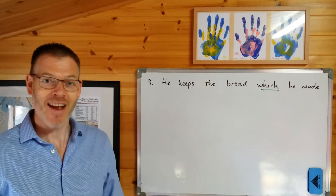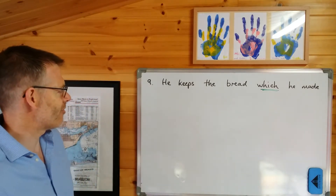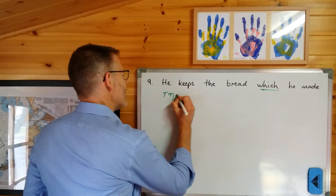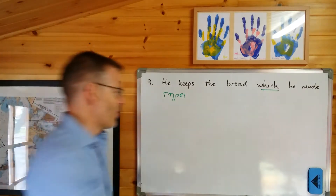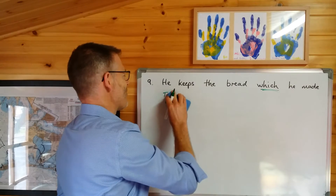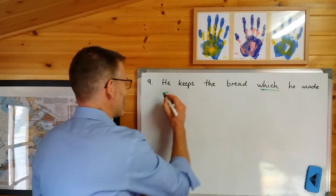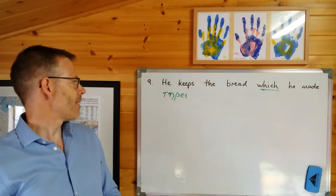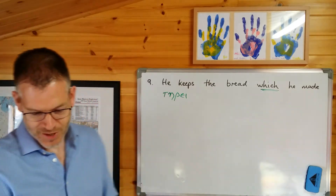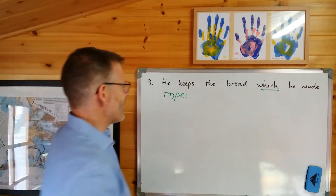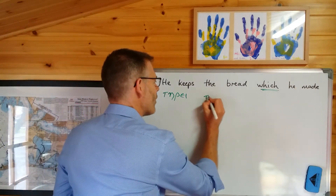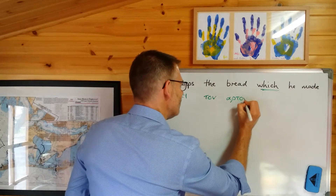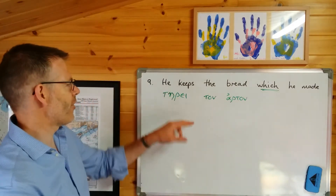"He keeps" comes from "I keep" — tero. So the conjugation is: tero, teres, terei, terumen, terete, terusin. So this is going to be terei — he keeps. The bread is ton arton, and I want it in the accusative because it's the object of the verb. He keeps the bread.